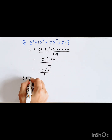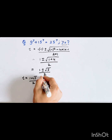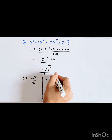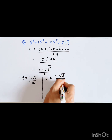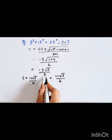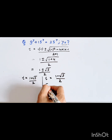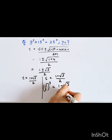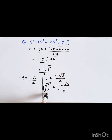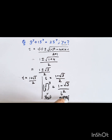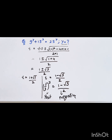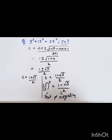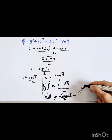So we have t equal to (1 plus root 5) divided by 2, or t equal to (1 minus root 5) divided by 2. Since (5/3) to the power y is always positive, and (1 minus root 5)/2 is negative, we reject the second solution.